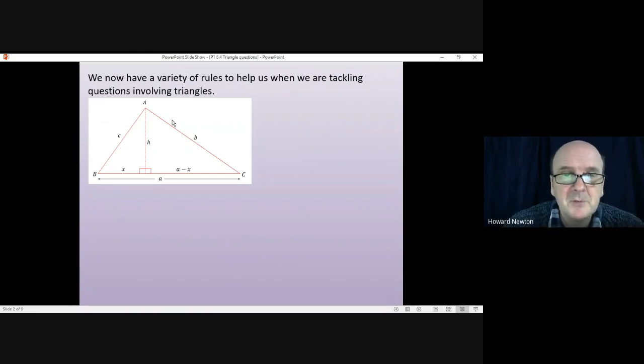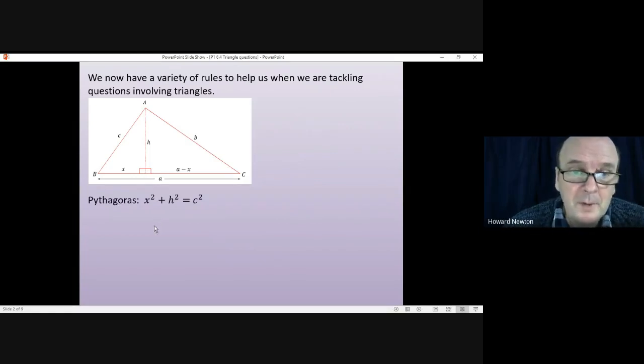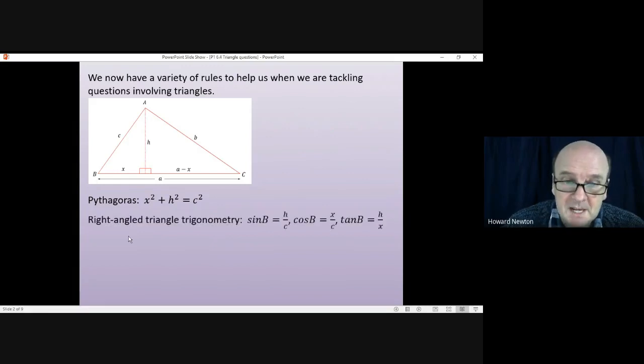If we had triangle ABC and then drew a perpendicular from A down to the base of the triangle, we have Pythagoras' theorem which we could use on either of these two right angle triangles. So for instance, x² + h² = c² in the left-hand triangle.